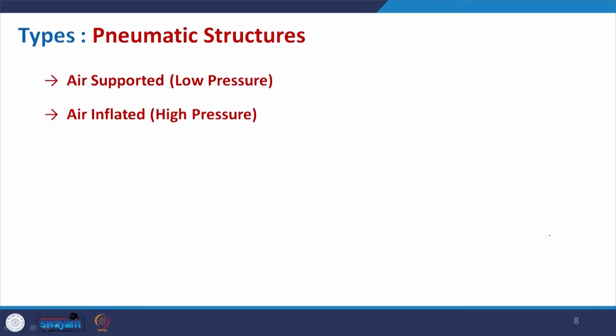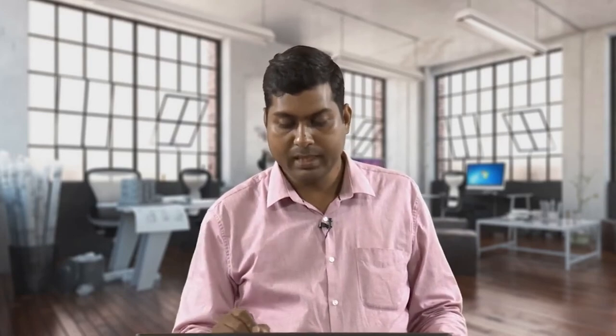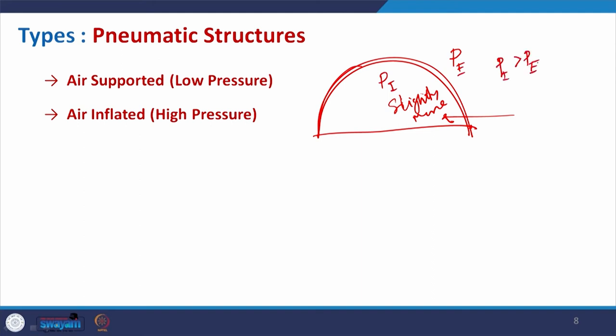Moving forward to the basic typology of pneumatic structures, there are two kinds. One is air-supported, which is normally low pressure, and the other is air-inflated. For the low-pressure type, we use a single layer of membrane and inject air to get volume. The interior pressure is slightly higher than exterior pressure — P interior slightly greater than P exterior — which holds the shape. Since the space will be habitable, we must calculate the pressure a human can tolerate.